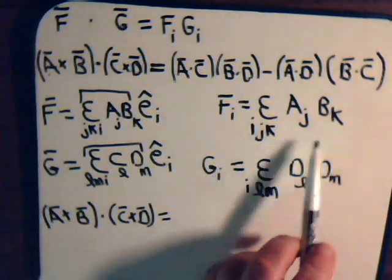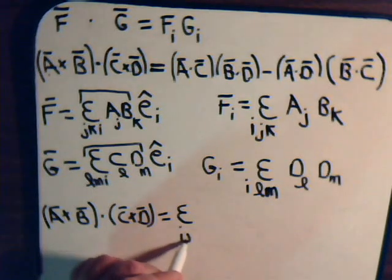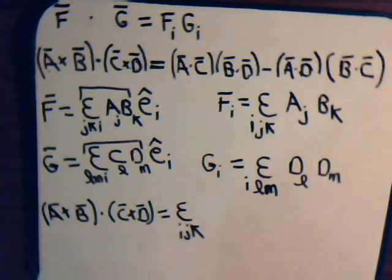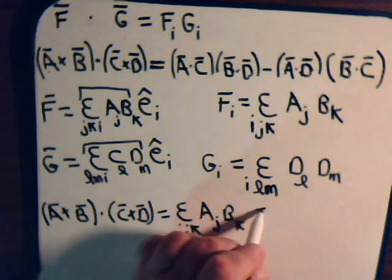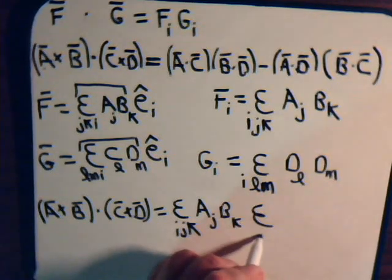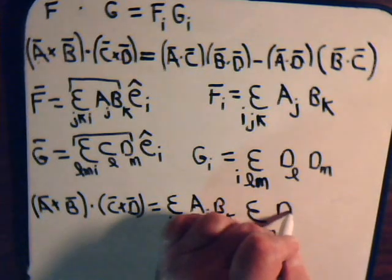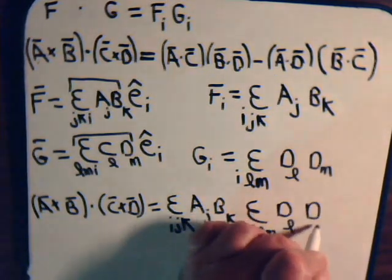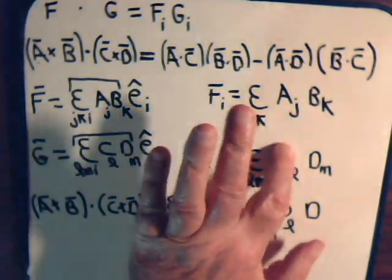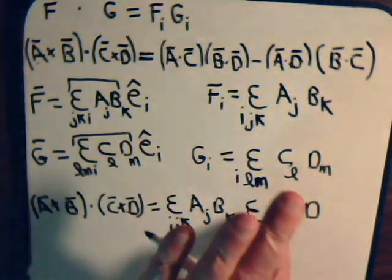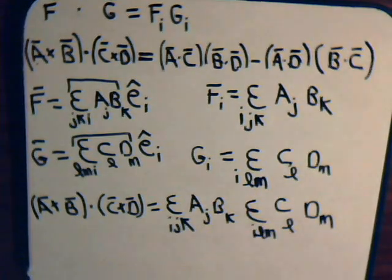equals this times this times this, so we have Epsilon IJK A_j B_k times Epsilon ILM... This is C sub L, not D sub L... D sub M.